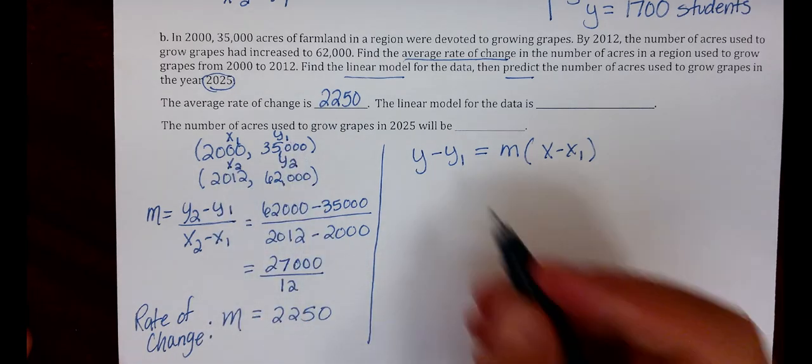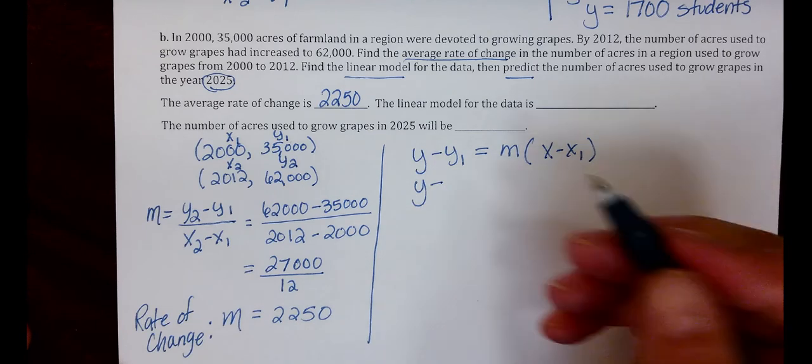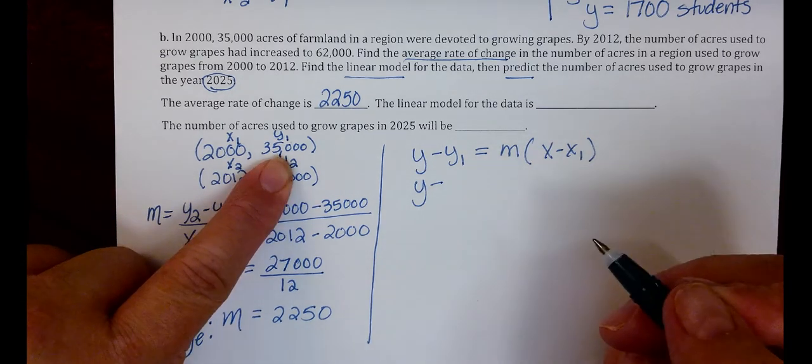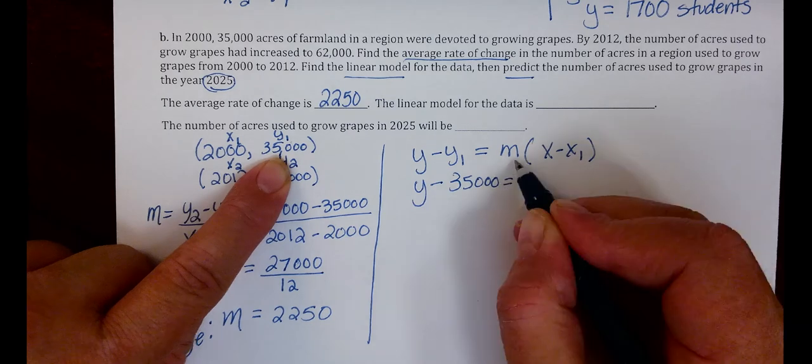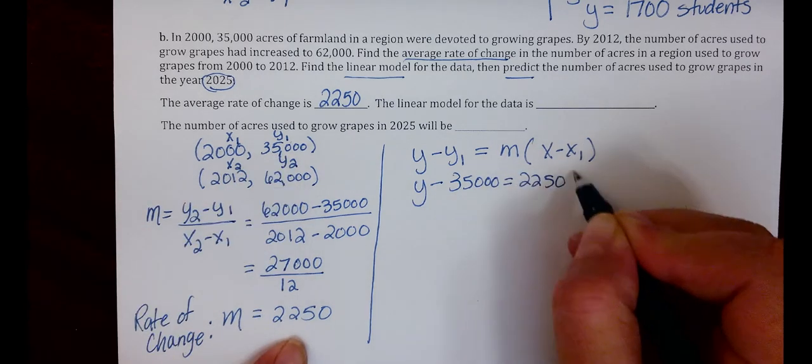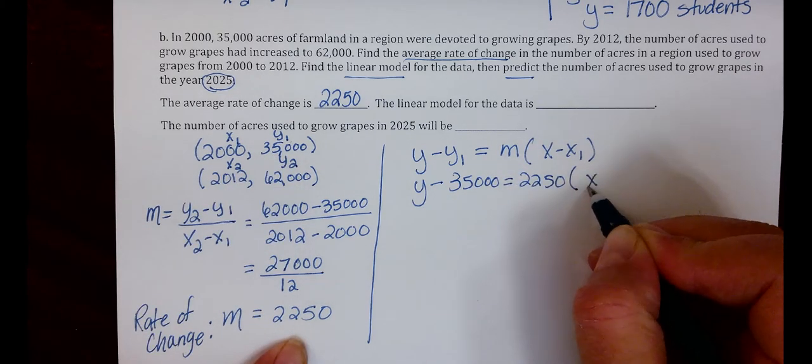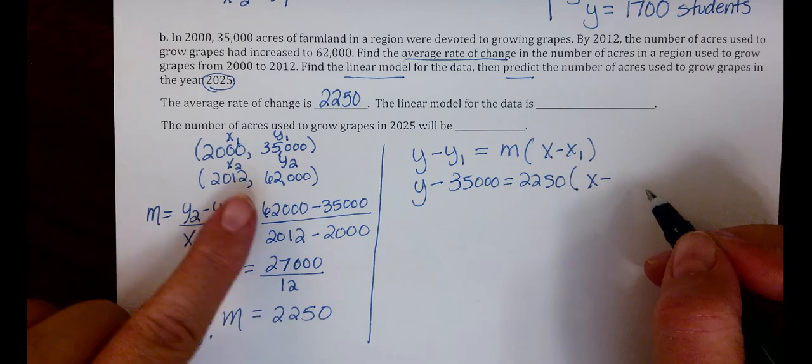Let's plug in. Y minus Y1, which is 35,000, equals M, which is 2,250, times X minus X1, 2,000.